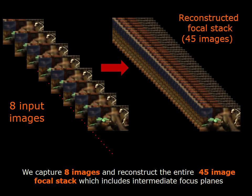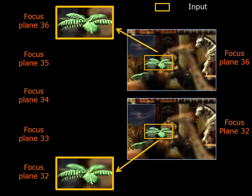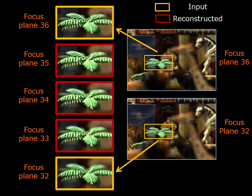What follows are some results demonstrating compressive epsilon photography. First, we vary only the focus of the camera. Here we capture 8 input images at different focus settings, then reconstruct a 45-image focus stack. Notice that in the close-up highlight of the palm tree, the focus changes from the front to the rear. This change is clearly captured in the reconstructed stack.